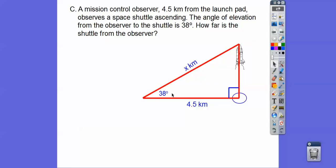Okay, so here's the 4.5 away from the launch pad right there. And there's the shuttle going up, ascending right there. And then there's the angle of elevation right there. They want to know what's the distance from this person to the shuttle right there.